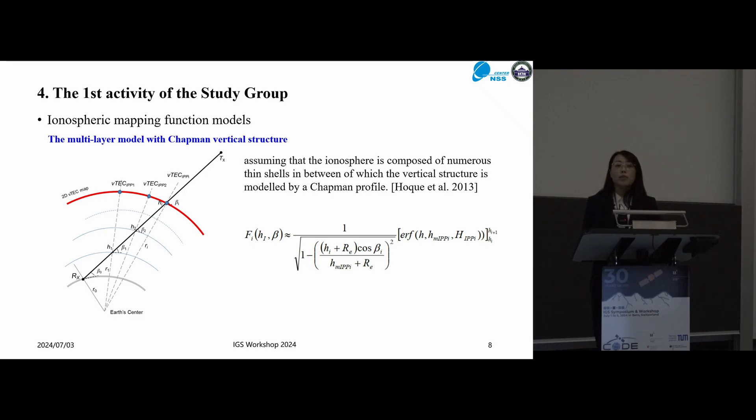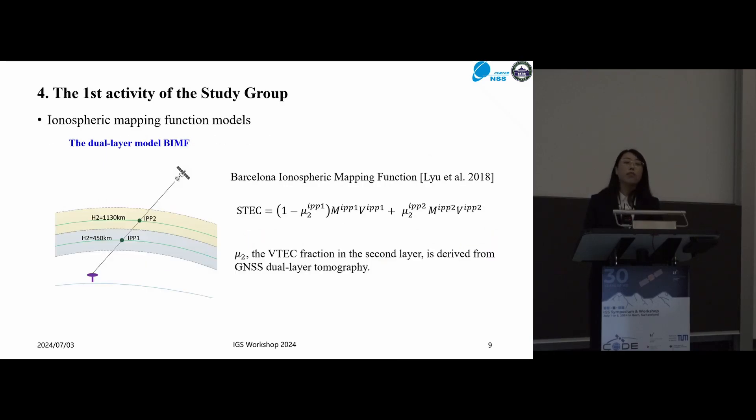In addition, the second type are the dual-layer or multi-layer ionospheric mapping function models. The multi-layer model proposed by the DLR takes into account the ionospheric horizontal gradient and vertical structure. The vertical electron density distribution is described by the Chapman layer assumption. Different from the multi-layer model, the UPC produced the dual-layer model with the vertical structure directly derived from GNSS dual-layer tomography.